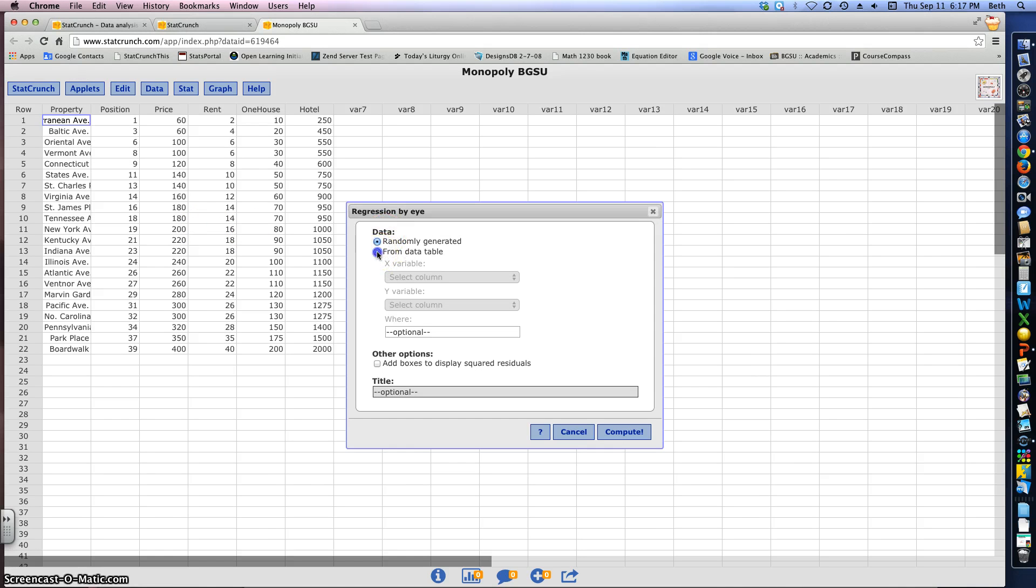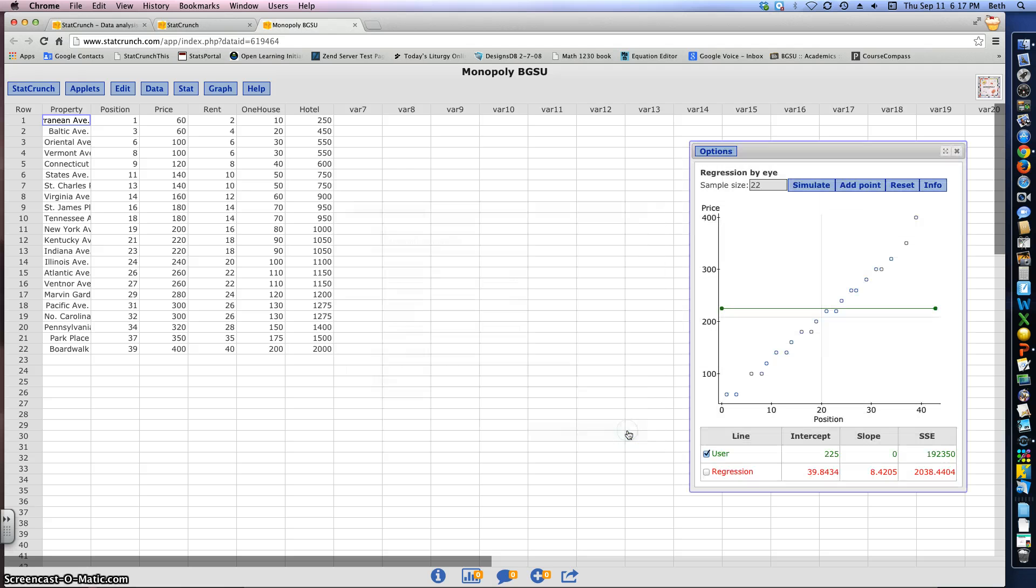And we're going to use an applet over here called Regression, and we're just going to do Regression by I. I'm going to do From the Data Table. So if you know a little bit about Monopoly, as you move across the board, the price of the properties increase. So if I look at the position it is on the board, so Mediterranean Avenue is in the first position, and boardwalk's in the 39th position. My y variable is going to be the price, so this is how much it would cost you to actually buy that property, and then press Compute, and we actually are only just going to worry about using the regression line.